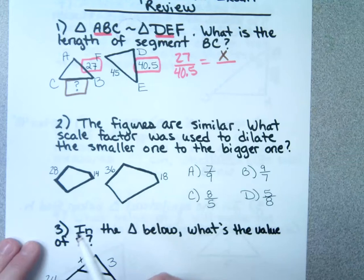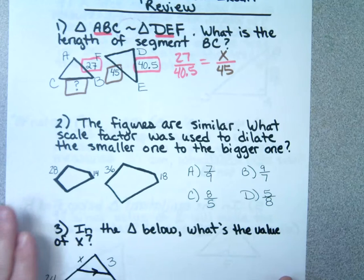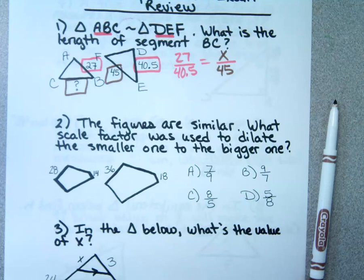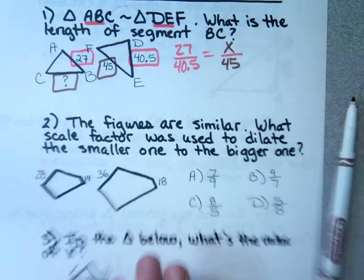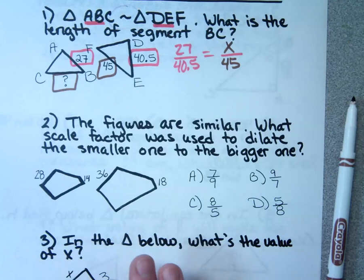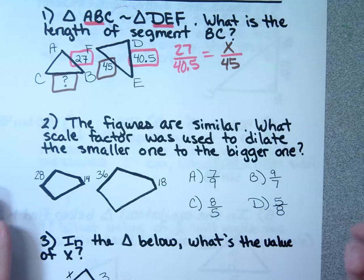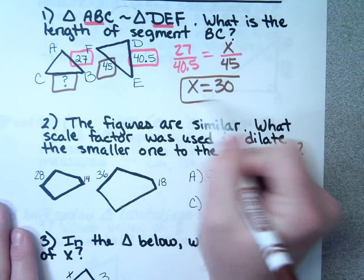How do I solve that? Cross multiply and divide. Let's see what our X is. What did you get? 30. And that is the length of BC, which is what they wanted. So if you ever know that shapes are similar, we can set up proportions to figure out the missing sides.